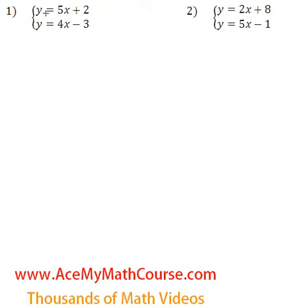Starting over here, we have y equals 5x plus 2 and y equals 4x minus 3. So how does substitution work?